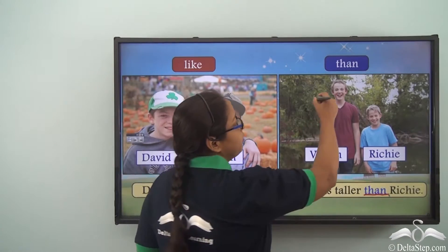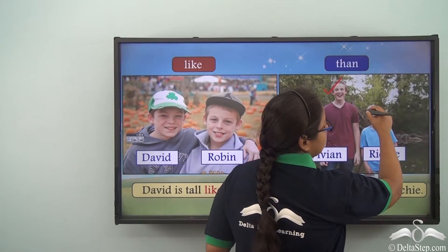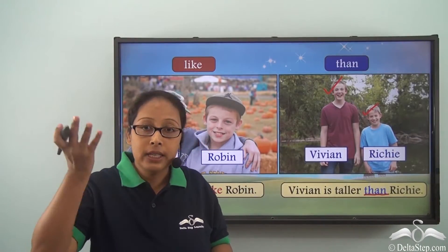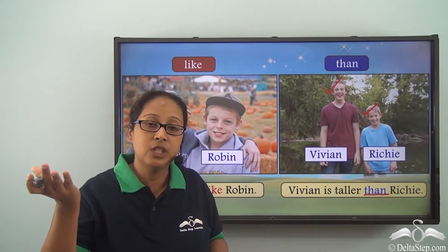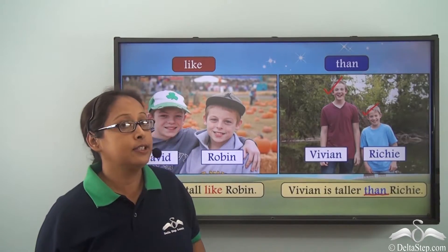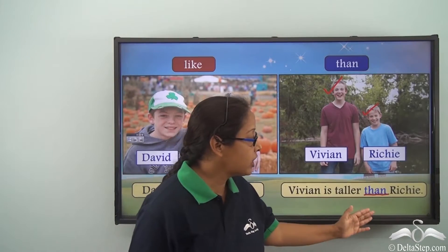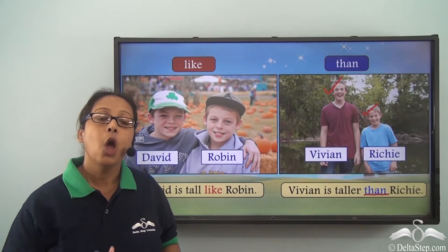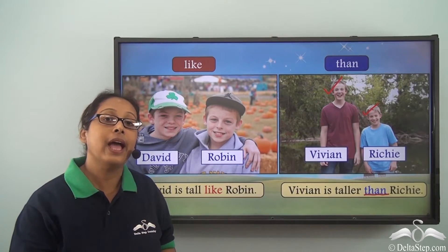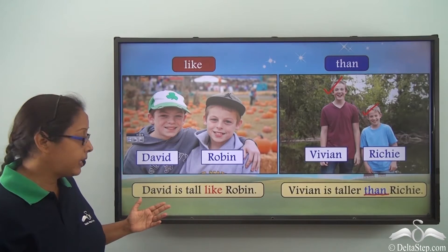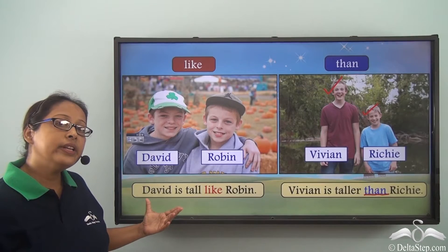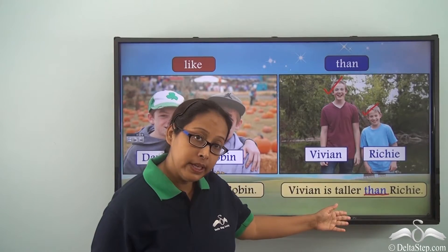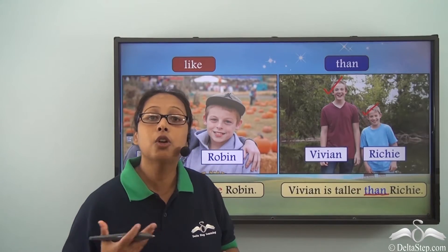So what do we mean? That Vivian is taller and Richie is shorter. We are making a comparison between two boys, and we can see that one is more tall and the other one is not as tall. We can also say Richie is shorter than Vivian. We are trying to point out the difference — one is taller than the other and one is shorter than the other. Unlike 'like,' which points out similarity, 'than' is used to bring out the contrast or the difference.